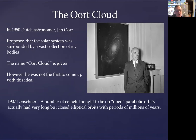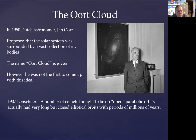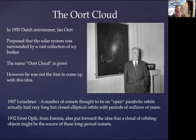In 1907, Lyncher had the idea — he was looking at the orbits of a number of comets and they were thought to be on parabolic orbits, very long orbits that were open such that they were going to pass the sun once and never come back. But he realized that quite a few of them, when you did the analysis, seemed to be actually very long closed orbits with periods of millions of years. Then in 1932, Ernst Öpik from Estonia said it looks like they might have a common origin — a cloud of orbiting objects might well be the source of some of these long-period comets.